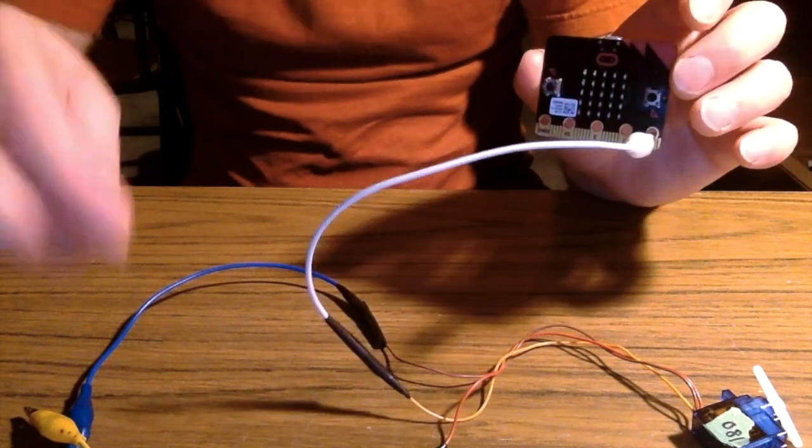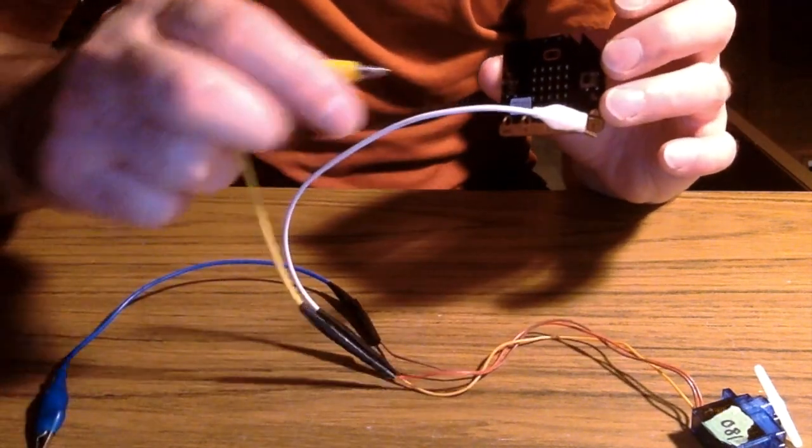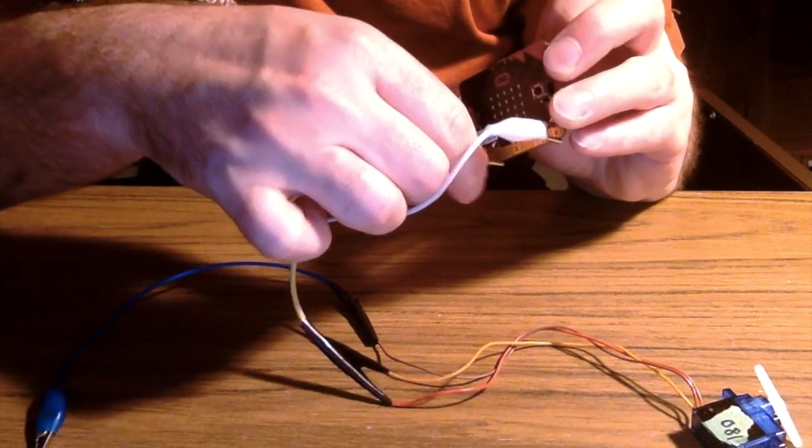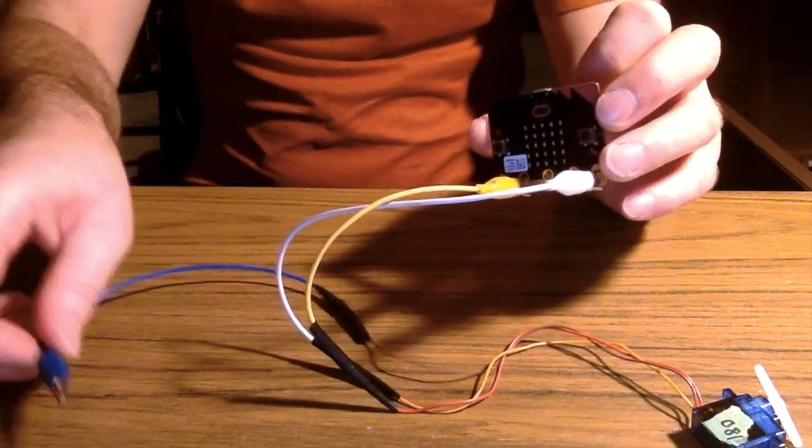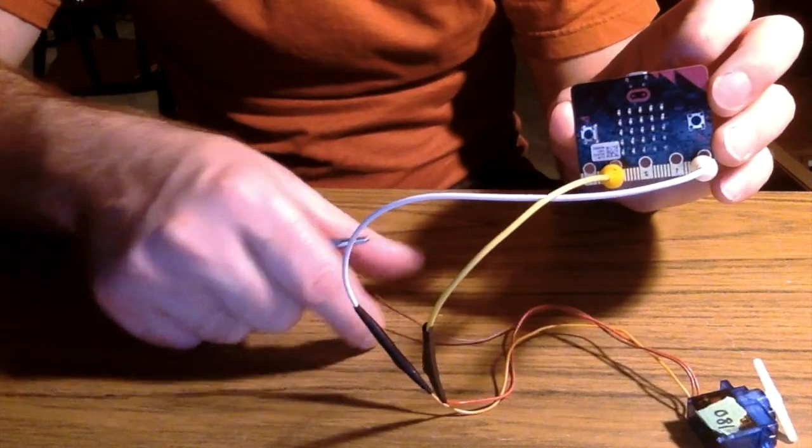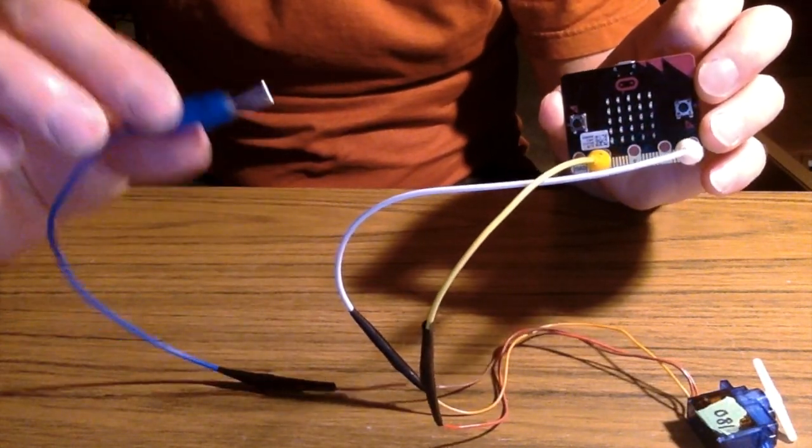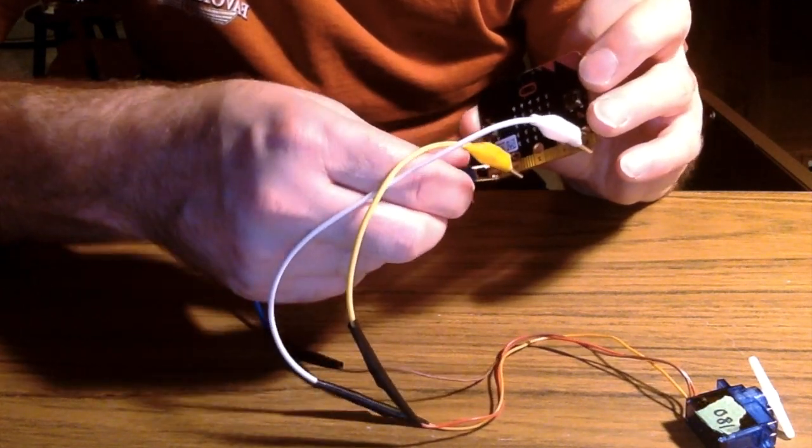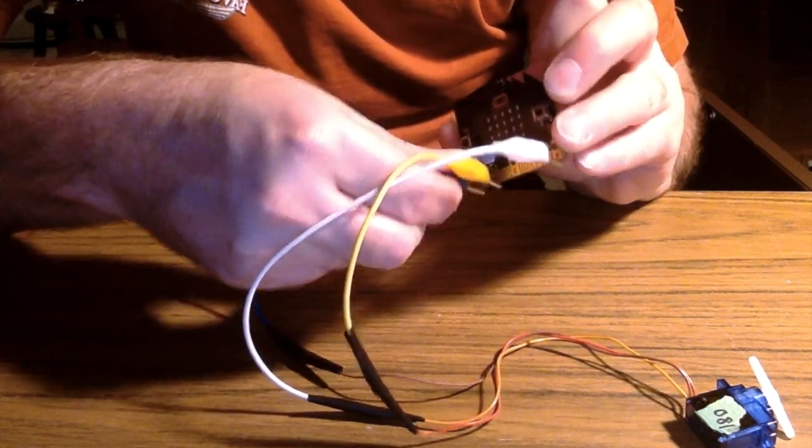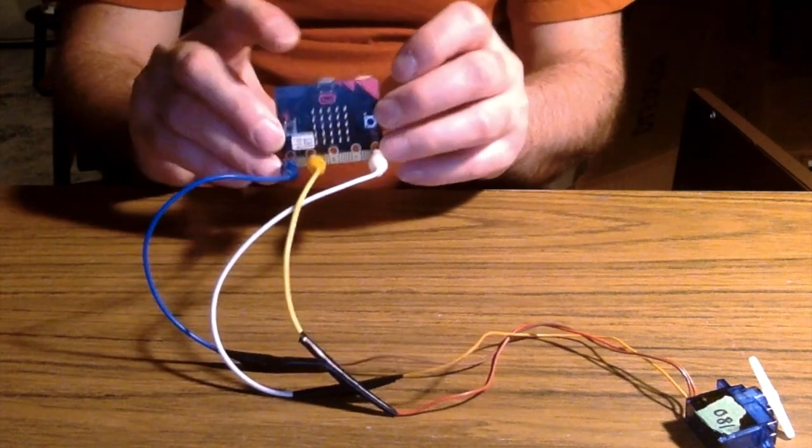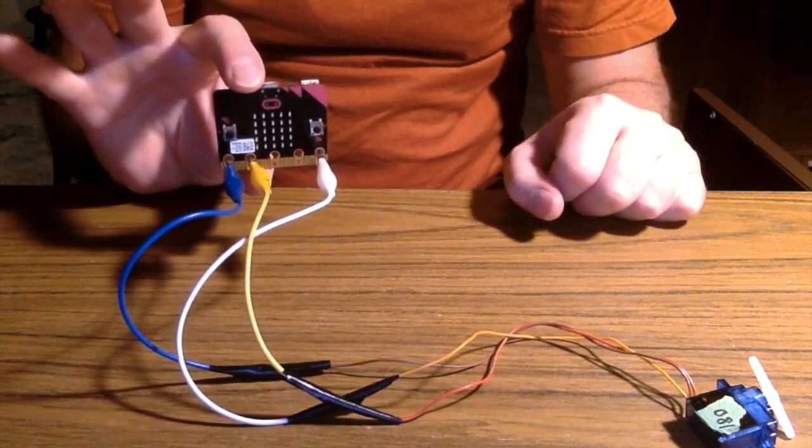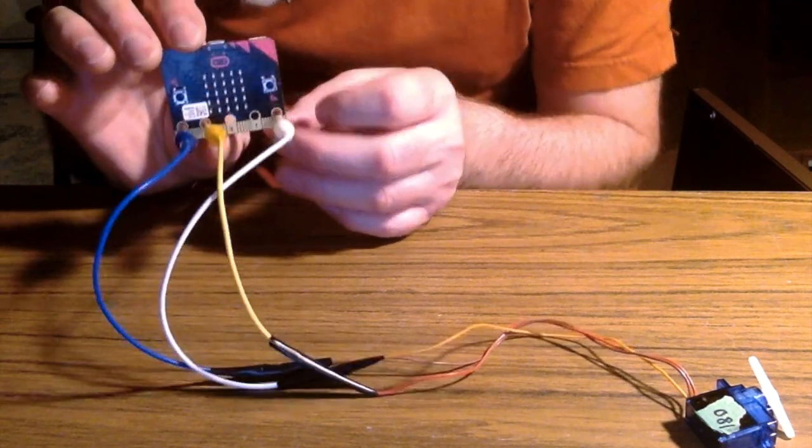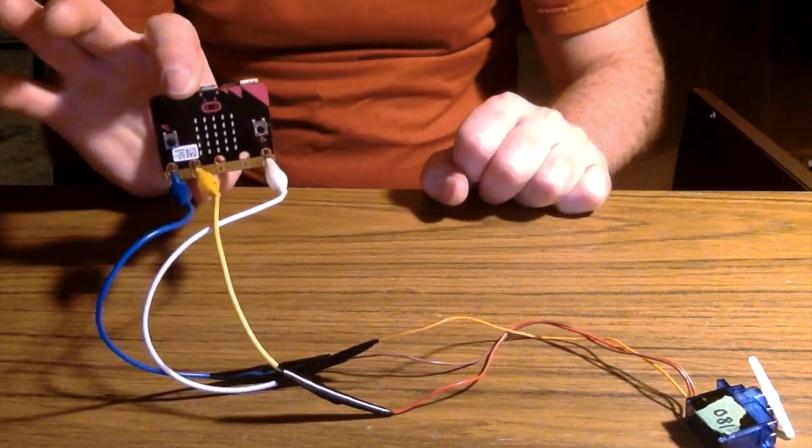That's gonna go on my zero pin on the micro:bit. The red wire is gonna go on my 3 volt pin, which is the 3V pin, and then the brown wire from the servo, which is my blue alligator clip, that's gonna go over onto the ground, which is this GND pin. Now my servo's all wired up, so we can start coding it. We hooked the servo into pin zero, so we're gonna code pin zero.